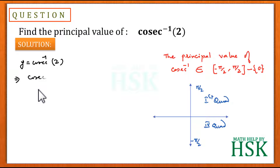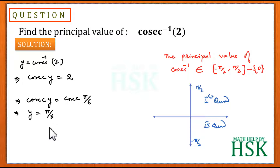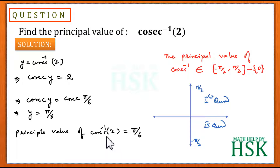So this means cosec y equals 2, or we can write cosec y equals cosec of pi by 6, because cosec of pi by 6 equals 2. Since cosec y equals cosec of pi by 6, we get y equals pi by 6. Therefore the principal value of cosec inverse of 2 is equal to pi by 6, which is the required answer.